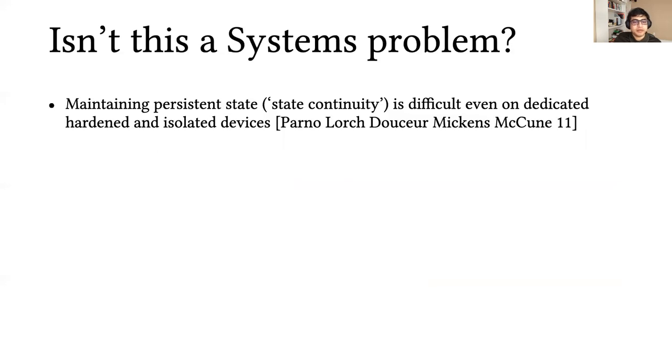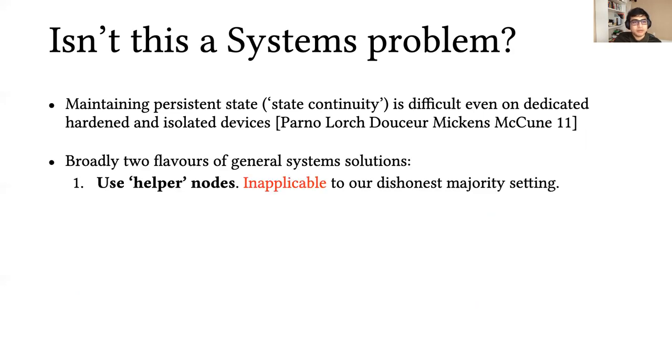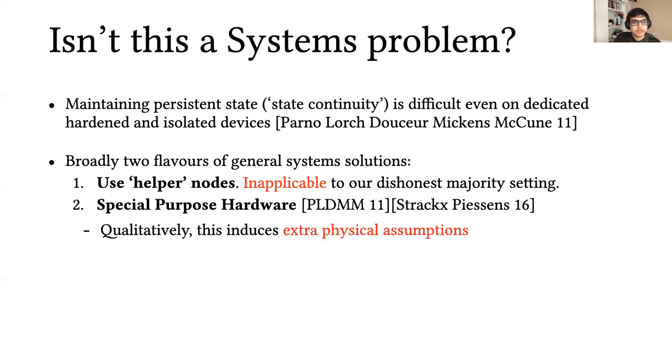This sounds like a systems problem, so we could in principle leave it up to the systems people to worry about. Indeed, Parno et al. identified that state continuity, which is the problem at hand, is difficult even on dedicated and hardened isolated devices. So broadly, there are two flavors of general solutions from the systems literature. One is to use helper nodes, which is inapplicable to our dishonest majority setting where there's only one honest party. Or we could also use special purpose hardware, as also shown in recent work.